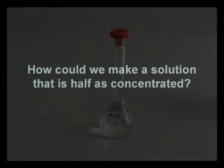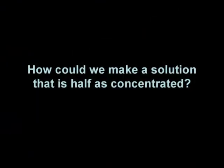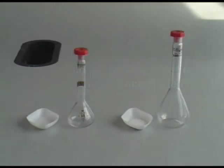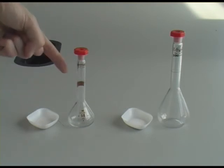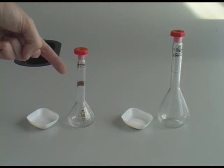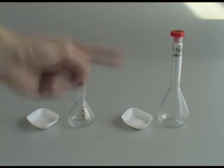So how would we go about preparing a solution which is half as concentrated as the one we've just made? Well there are two ways that this could be done. We could start with one and a half grams of citric acid, and again use a 50ml volumetric flask. This would give us a solution of one and a half grams of citric acid in 50ml of water.